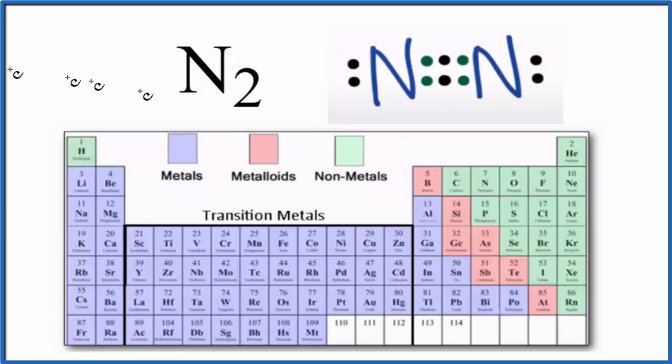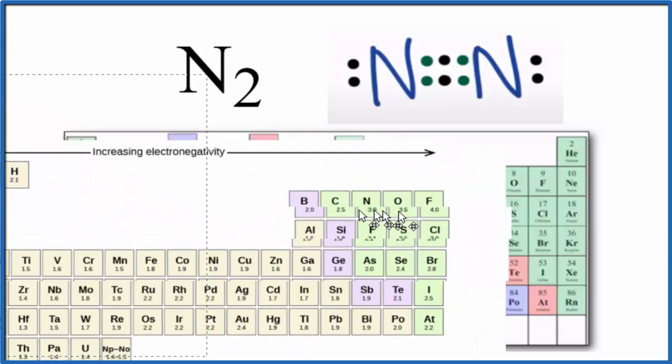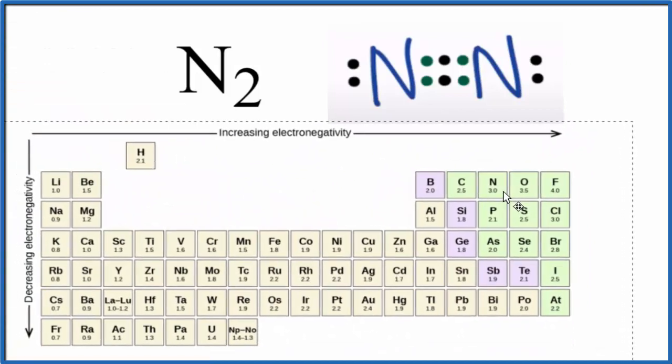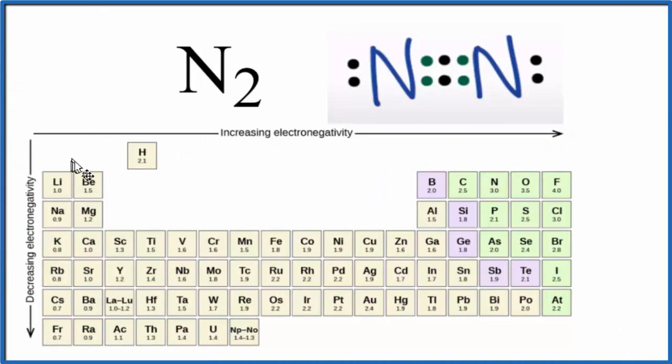We can look at electronegativity as well to figure out whether a compound is ionic or covalent. Here's the periodic table, and we have the electronegativity values underneath each element. We find nitrogen again, and it says 3.0, so each one has an electronegativity value of 3.0.